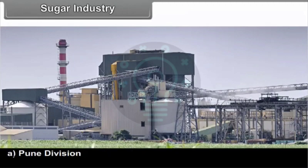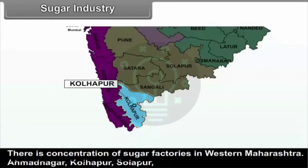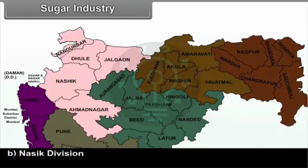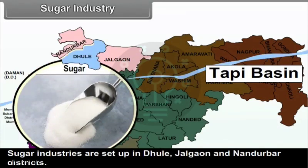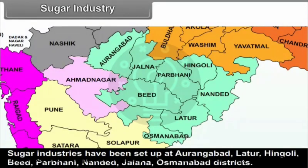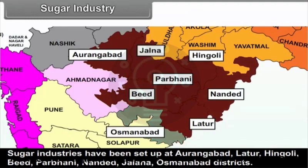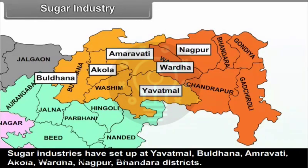Distribution of sugar industry: In Pune Division, there is a concentration of sugar factories in Western Maharashtra — Ahmednagar, Kolhapur, Solapur, Pune, and Sadhara are prominent districts. In Nasik Division, sugarcane is produced in the Tapi Basin, so sugar industries are set up in Dhule, Jalgao, and Nandurbar districts. In Aurangabad Division, sugar industries have been set up at Aurangabad, Latur, Hingoli, Beed, Parbhani, Nanded, Jalna, and Osmanabad districts. In Nagpur-Amravati Division, sugar industries are set up at Yavatmal, Buldana, Amravati, Akola, Vardha, Nagpur, and Bhandara districts.